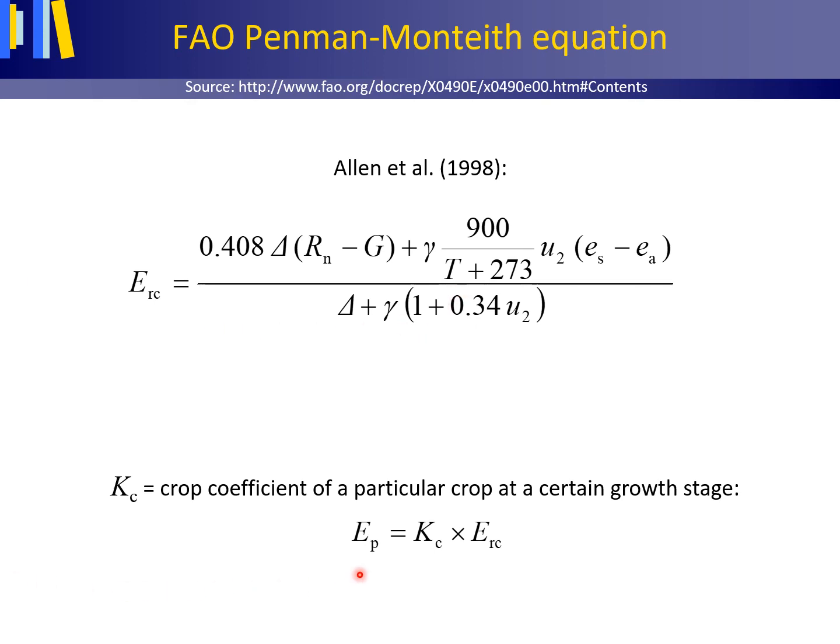In order to estimate the potential evaporation of a particular crop, it is common practice to calculate the above-defined reference crop evaporation and to multiply this by the crop coefficient kc of the particular crop as determined from research, for instance, by using a lysimeter. The value of kc changes with the growth state of the crop.